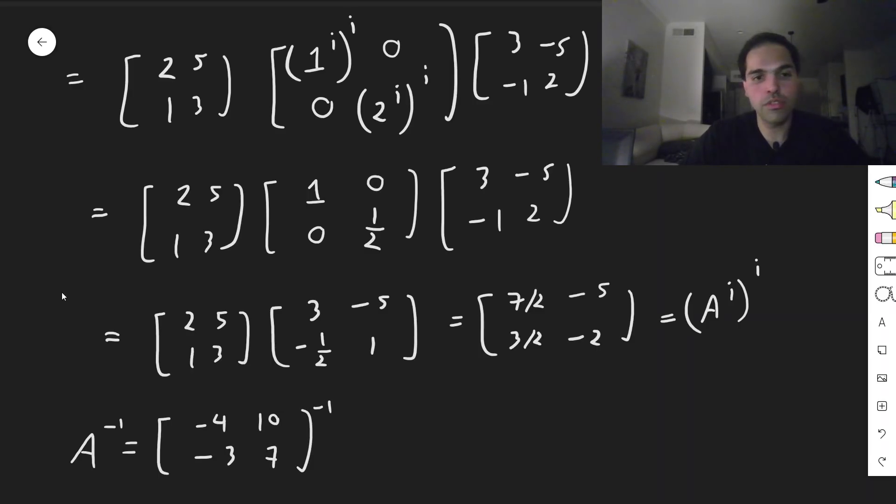So the determinant is 1 half. Sorry, the determinant is 2, so you do 1 half of 7, minus 4, minus 10, 3. And what we get, lo and behold, 7 halves, minus 5, 3 halves, minus 2.